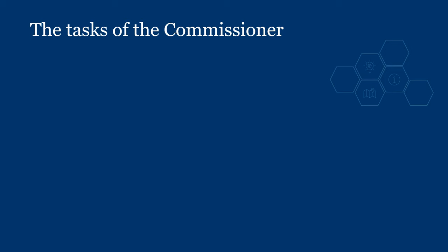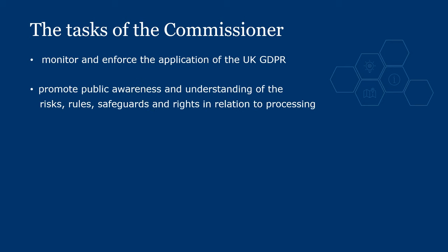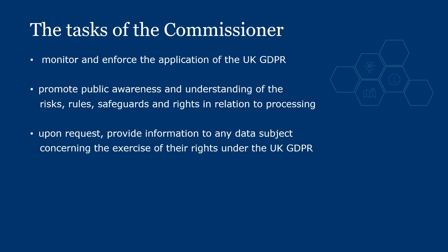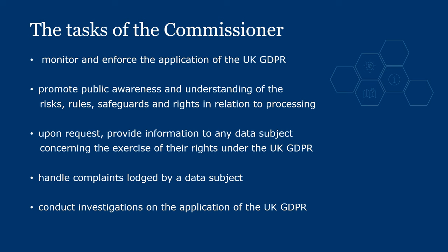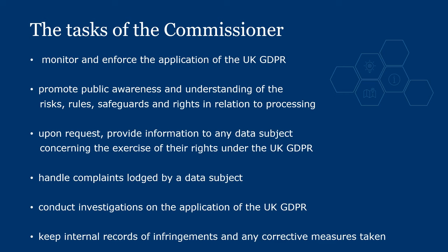Article 57 of the UK GDPR lists the Commissioner's tasks. They include: monitor and enforce the application of the UK GDPR; promote public awareness and understanding of the risks, rules, safeguards and rights in relation to processing, with specific attention given to children; upon request, provide information to any data subject concerning the exercise of their rights; handle complaints lodged by a data subject; conduct investigations on the application of the UK GDPR; and keep internal records of infringements and any corrective measures taken. Please see Article 57 for a full list of tasks.